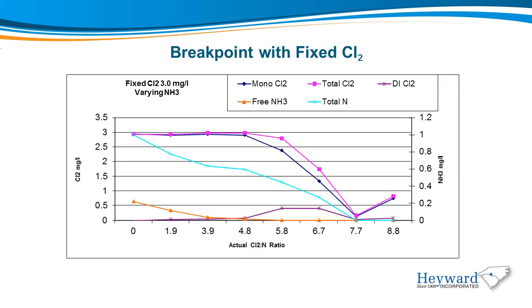This is a slightly different representation of the breakpoint curve where the chlorine is fixed and the ammonia is varied, which better represents an actual water treatment process. Samples were prepared with an initial chlorine dosage of 3 mg per liter, and the ammonia concentration was decreased in each sample. While the ratio is less than 5-to-1, the total chlorine and monochloramine are equivalent. When we reach the 5-to-1 ratio, they begin to separate as dichloramine is forming. The total ammonia decreases as the graph goes from left to right, and the free ammonia begins at an elevated level and decreases to near zero at the 5-to-1 ratio. The optimal control range is where the free ammonia and dichloramine are at a minimum.